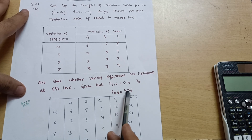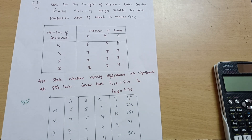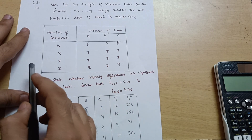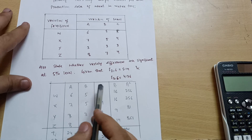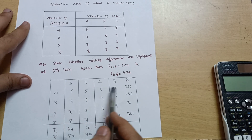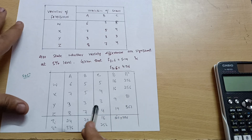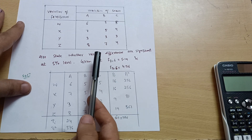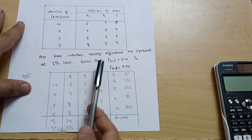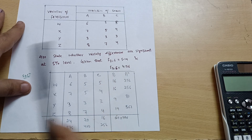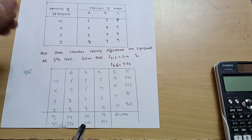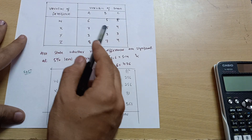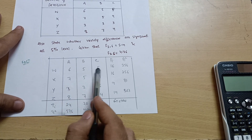F(3,6) = 4.76. The main difference between one-way and two-way ANOVA is that in one-way ANOVA you sum either column-wise or row-wise, whereas in two-way ANOVA you sum both column-wise and row-wise. Also, if a problem gives only one F-ratio it is a one-way ANOVA problem; if two F-ratios are given, it is a two-way ANOVA problem.